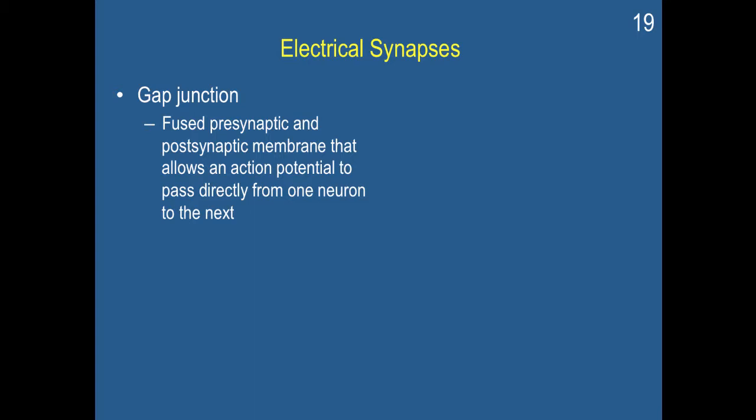A final type of synapse is an electrical synapse. So the ones that we've been talking about so far are chemical synapses, in which case a chemical is released from the presynaptic neuron to the postsynaptic neuron. In an electrical synapse, there is no chemical message. A common electrical synapse is a gap junction in which the presynaptic and postsynaptic membranes are fused so that an action potential passes directly from one neuron to the next.